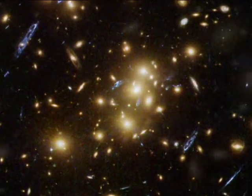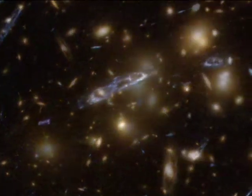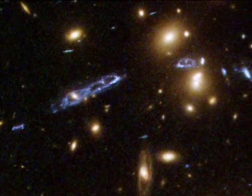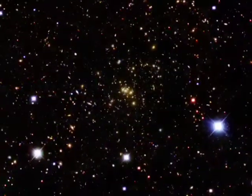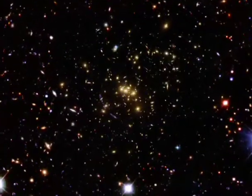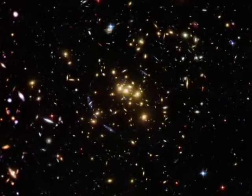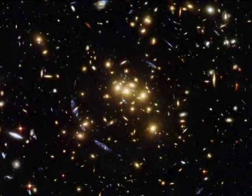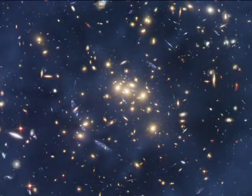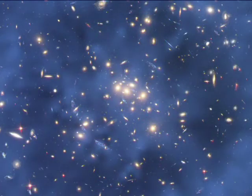An international team of astronomers using the NASA ESA Hubble Space Telescope has discovered a ghostly ring of dark matter formed long ago during a colossal collision between two galaxy clusters. This is the first time that dark matter has been found with a distribution that differs radically from the distribution of ordinary matter.